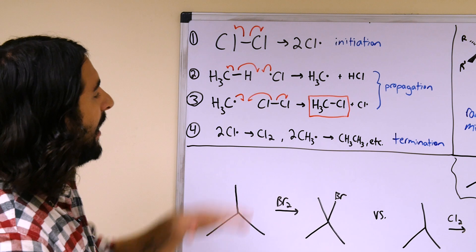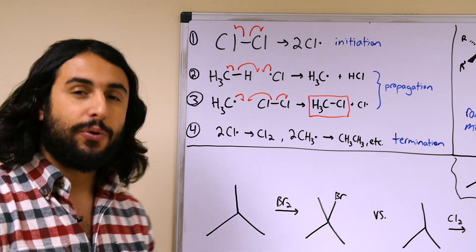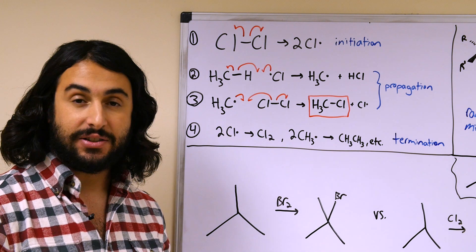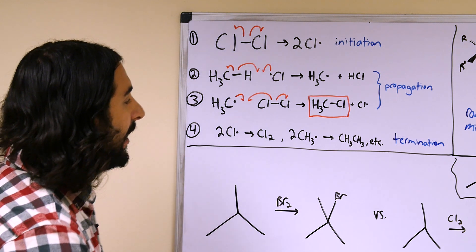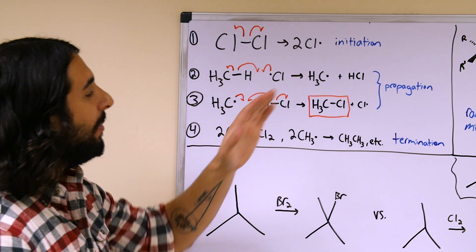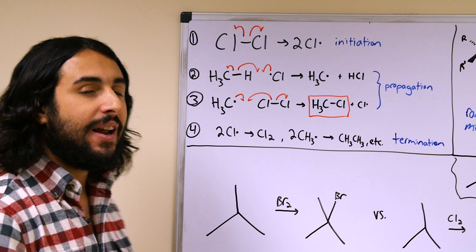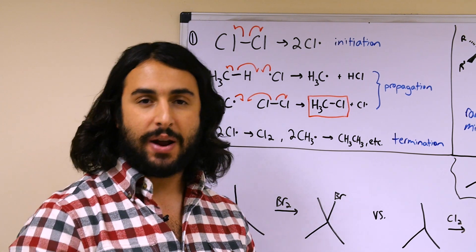We could have tetrachloromethane. That's how halogenation works for alkanes. It's going to have to be a radical mechanism with the initiation, propagation and termination as we see.